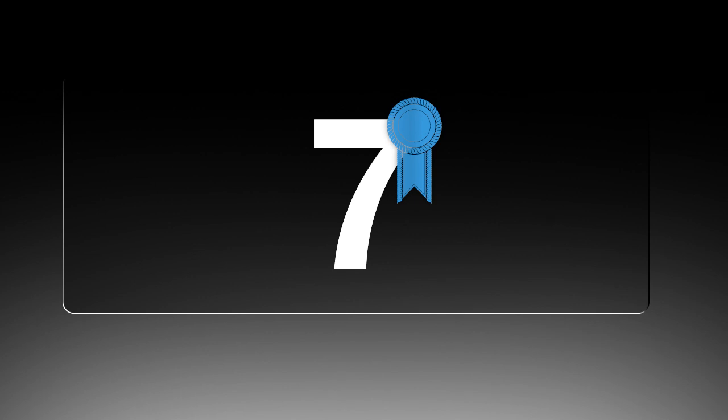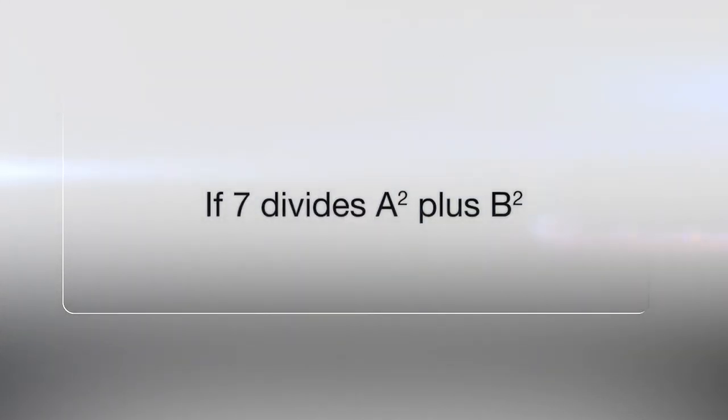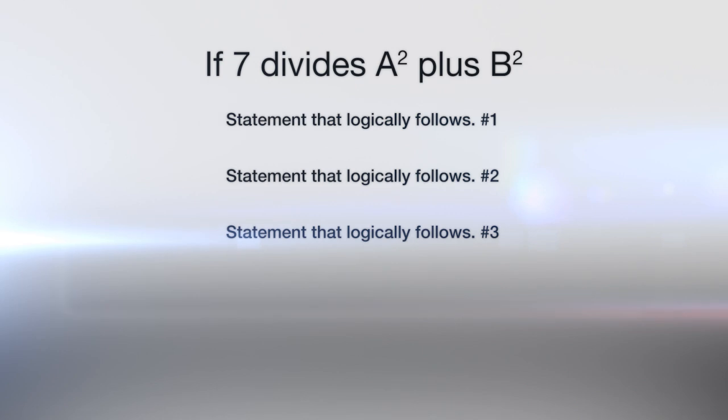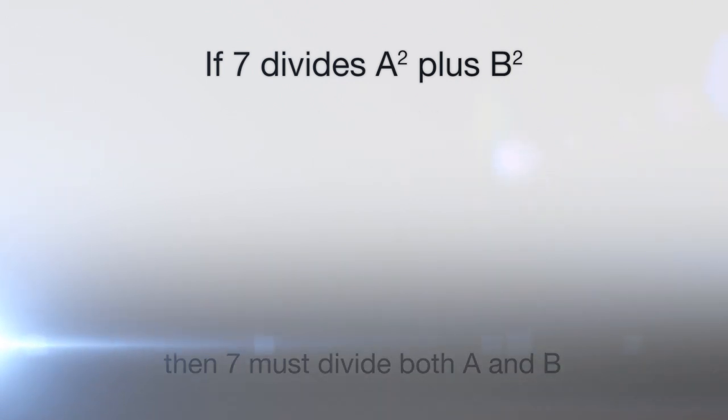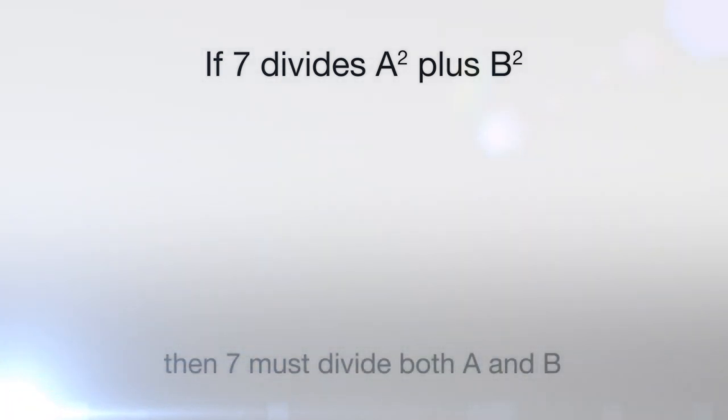So let's now prove the statement. To do that I'm going to start with a first line that is going to say if 7 divides A squared plus B squared. Then there'll be some statements that logically follow one from the other and at the end I want to have 7 must divide both A and B. So let's start. So our first line is if 7 divides A squared plus B squared. Well if that's the case then using our lazy mathematics then we can conclude that A squared plus B squared equals 0. I can replace A squared and B squared with 0.